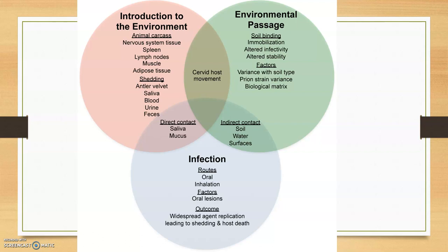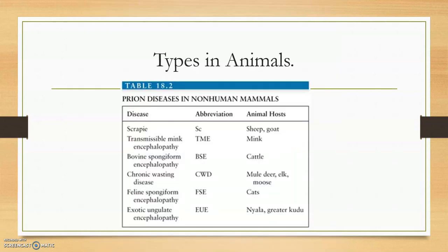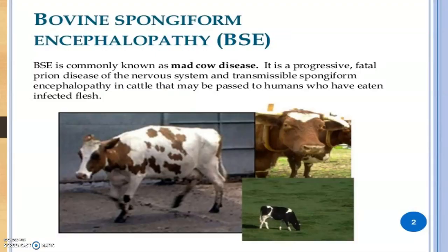Types of prion disease in animals include: scrapie (SC) in sheep and goats; transmissible mink encephalopathy in mink; bovine spongiform encephalopathy (BSE), a serious condition in the UK and America in the 1970s–80s in cattle; chronic wasting disease (CWD) in deer, elk, and moose; and feline spongiform encephalopathy in cats. BSE is known as mad cow disease.